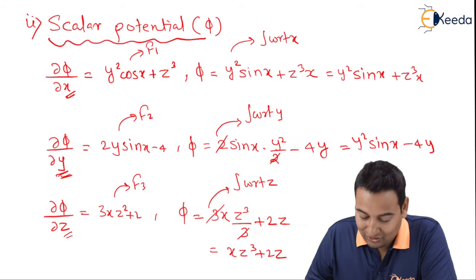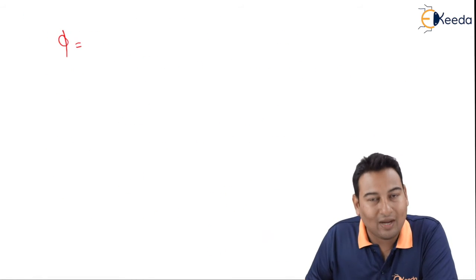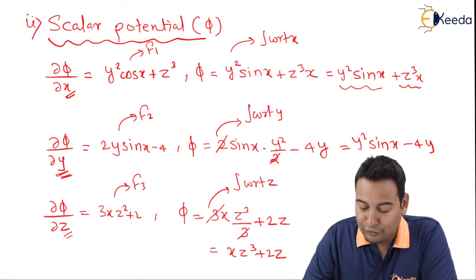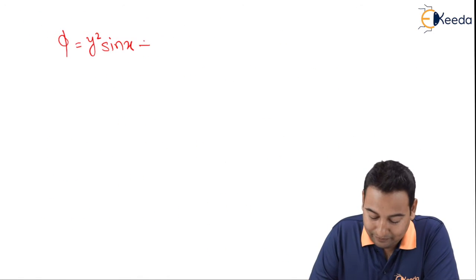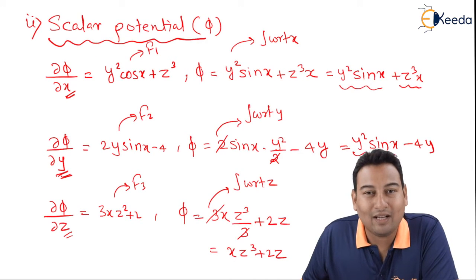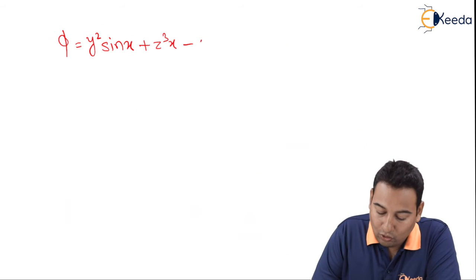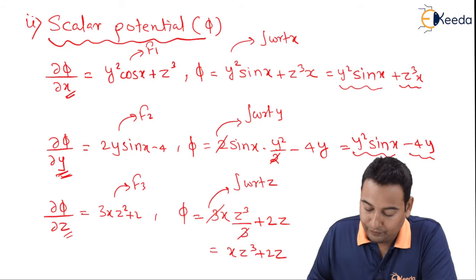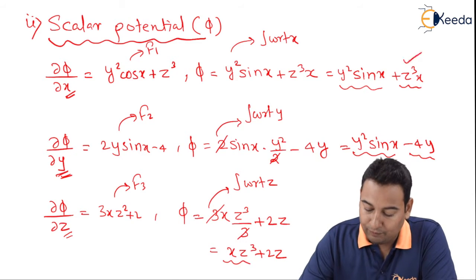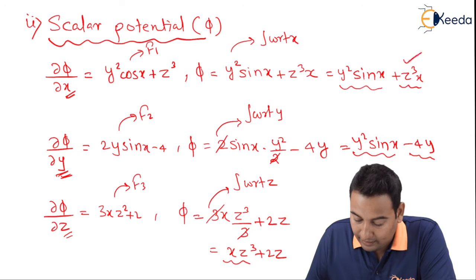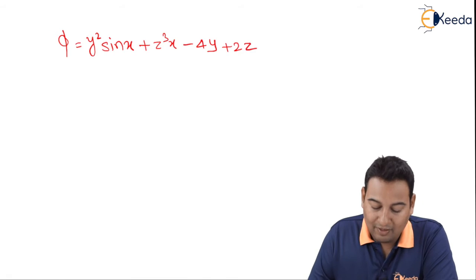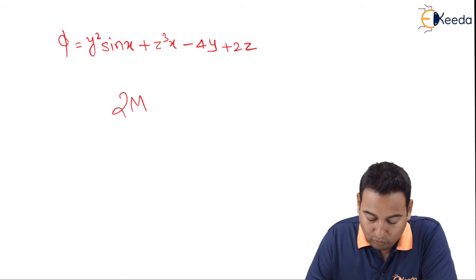Combining all terms without repetition: from the three integrations we collect y² sin x, z³x, −4y, and 2z. Therefore the scalar potential is φ = y² sin x + xz³ − 4y + 2z. Two marks secured for the scalar potential.